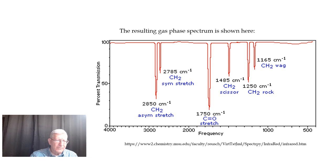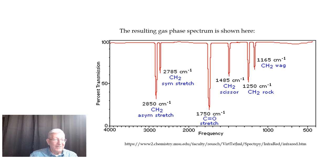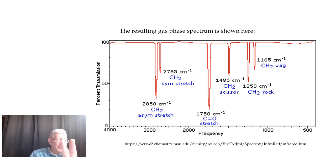Here is the gas-phase spectrum of formaldehyde. There are six very nice absorptions — one, two, three, four, five, six — corresponding to the six vibrational modes: the asymmetric stretch, symmetric stretch, CO stretch, scissoring, rocking, and wagging. The names of these vibrations are consistent with the physical changes you're looking at.